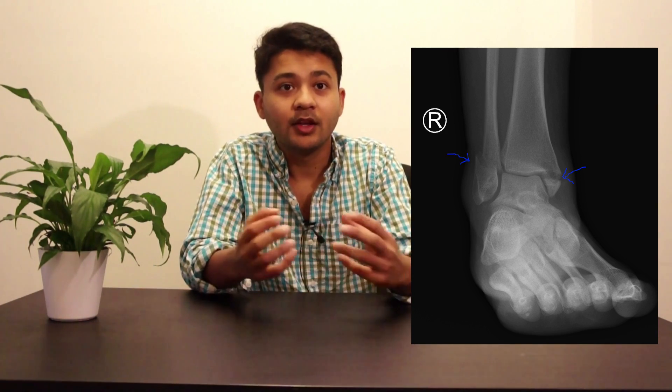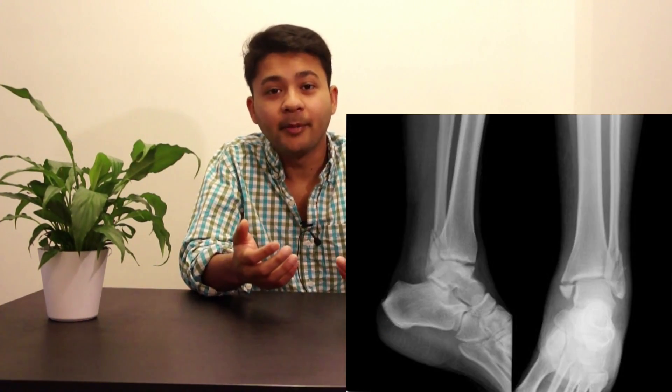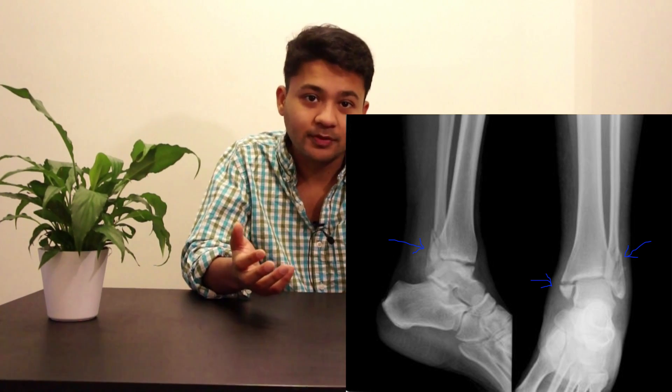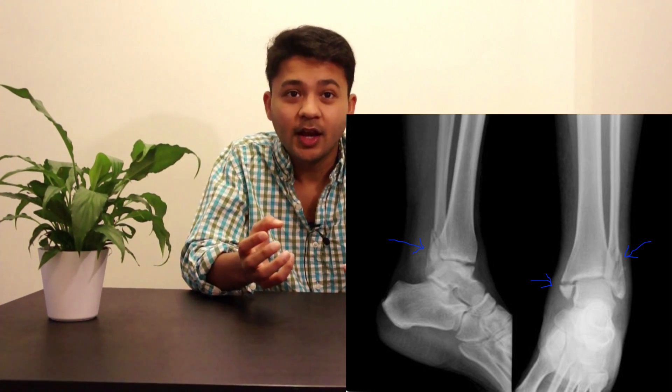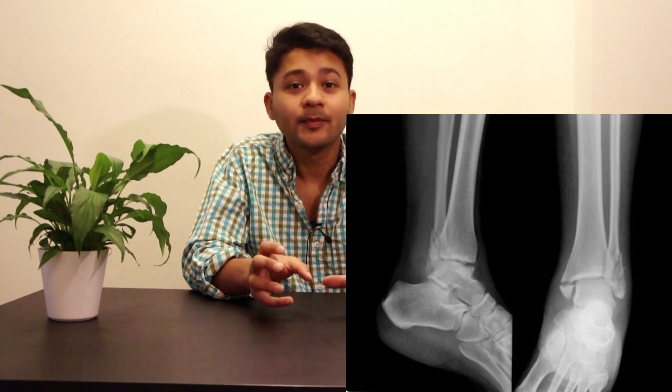Moving on to more complex fractures: bimalleolar fractures occur when both the medial malleolus and lateral malleolus are fractured. When the posterior malleolus is also fractured along with the bimalleolar injury, it becomes a trimalleolar fracture. These are very complicated fractures and there is absolutely no doubt that they are unstable — they require operative correction.